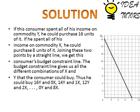Similarly, to find the horizontal intercept, divide income by the per-unit cost of the commodity on the horizontal axis. In this case, the commodity on the X-axis is commodity X, which costs $2 per unit. So we divide $16 by $2 and we get 8 — the horizontal intercept, or the X-axis intercept.